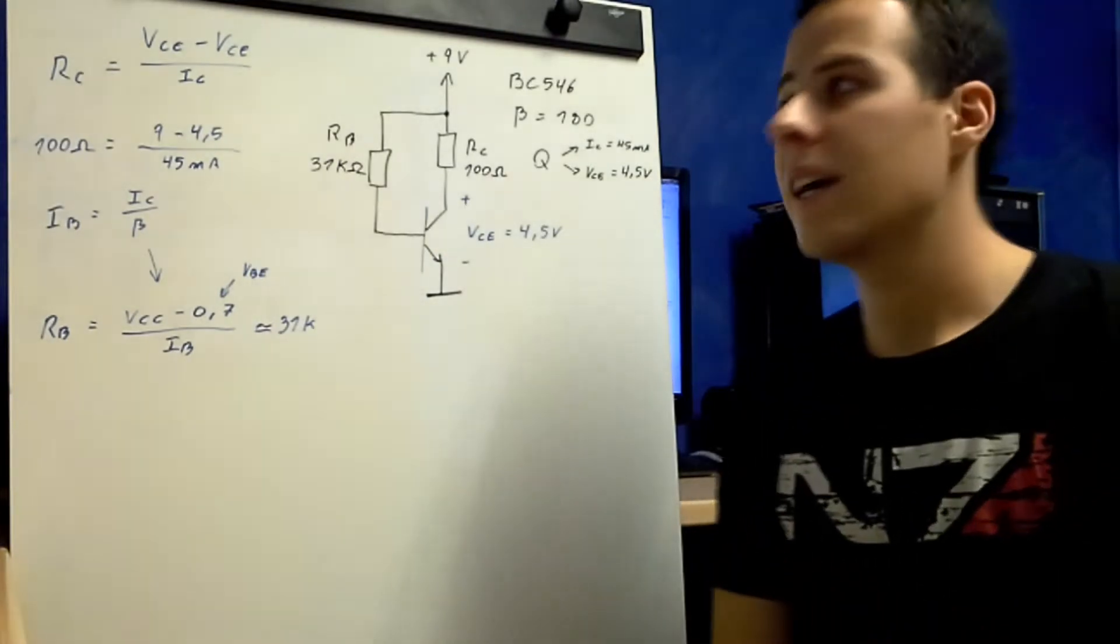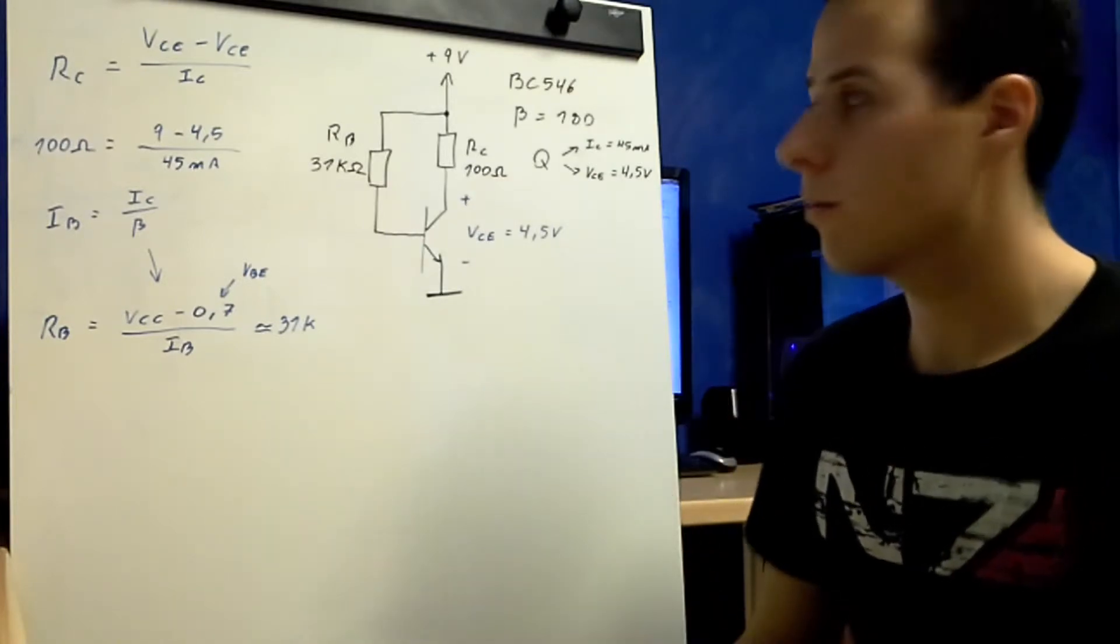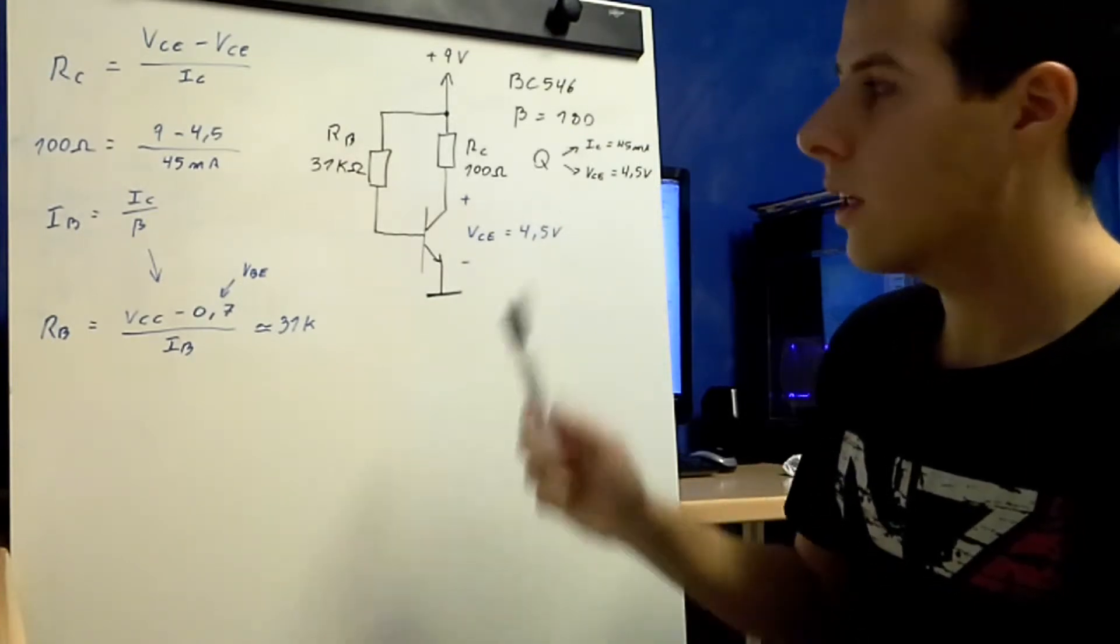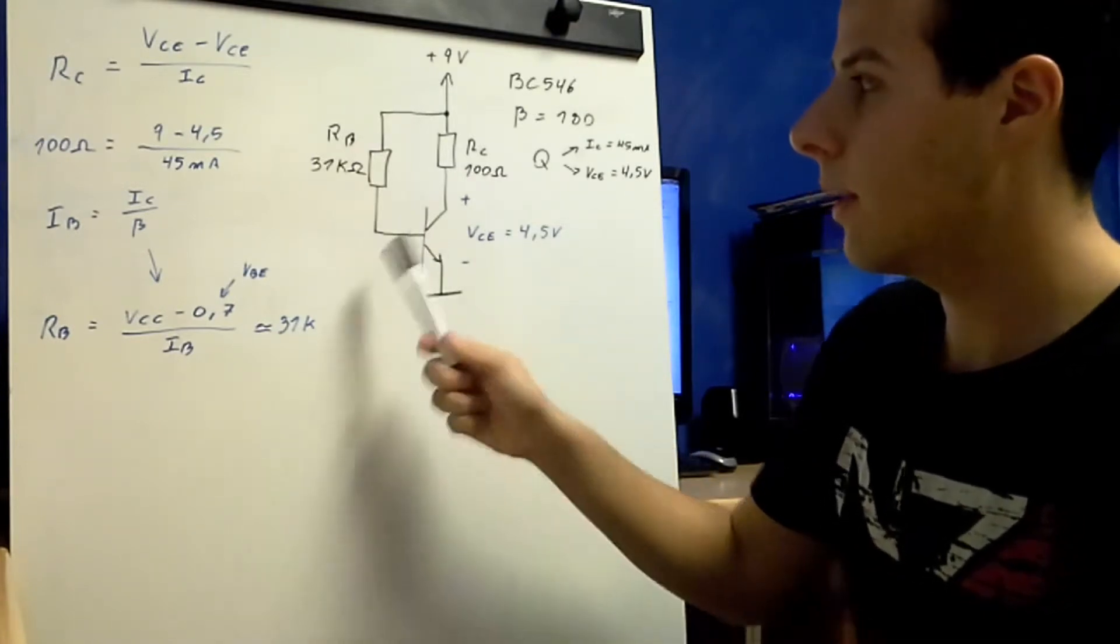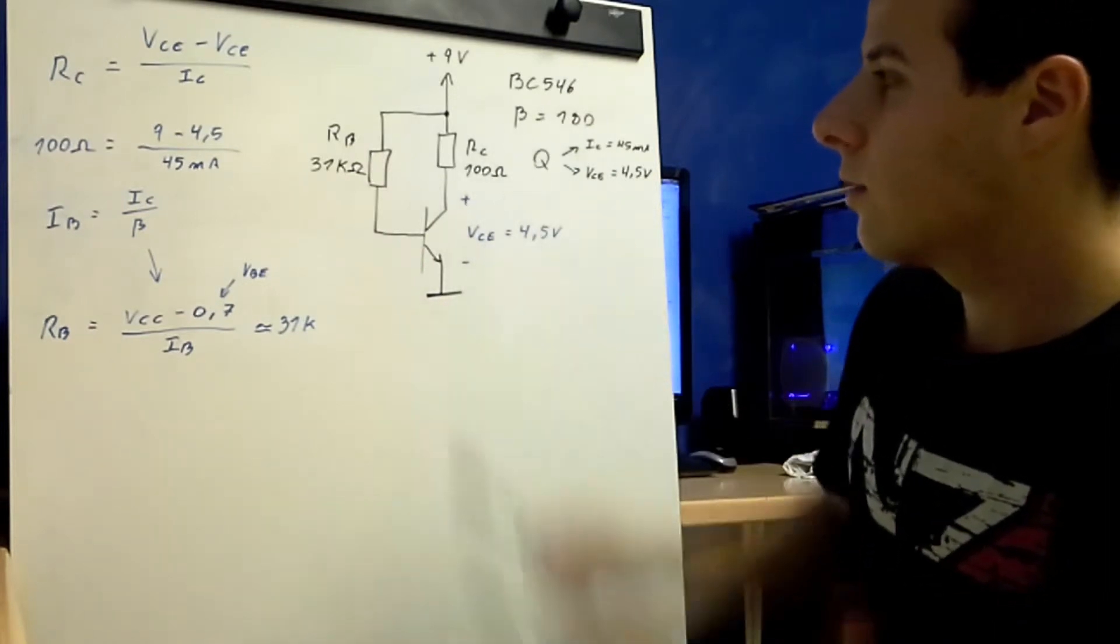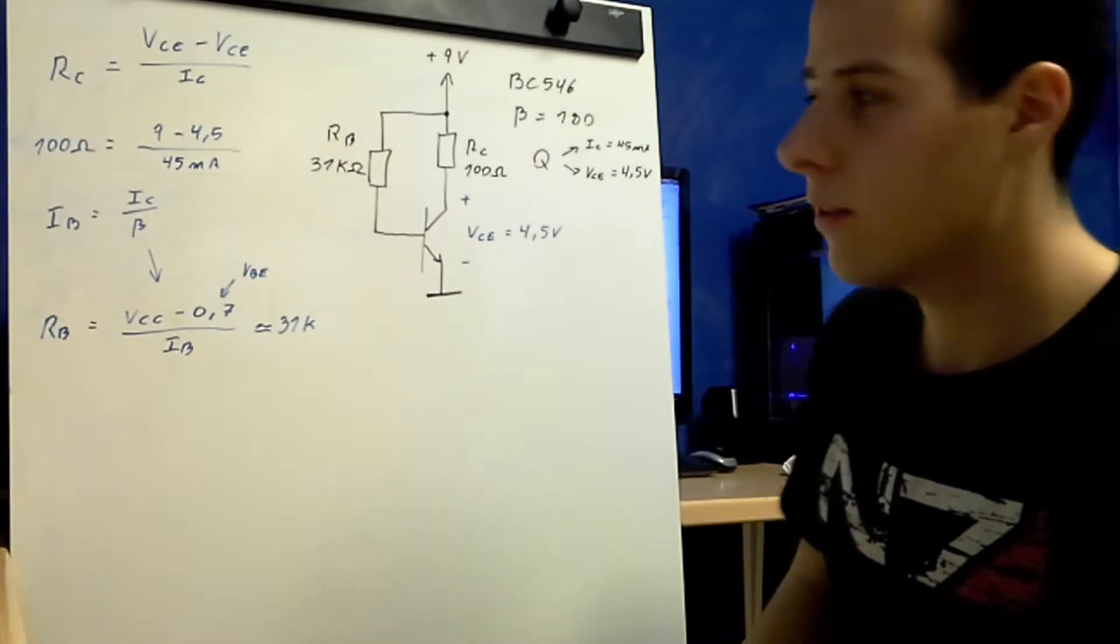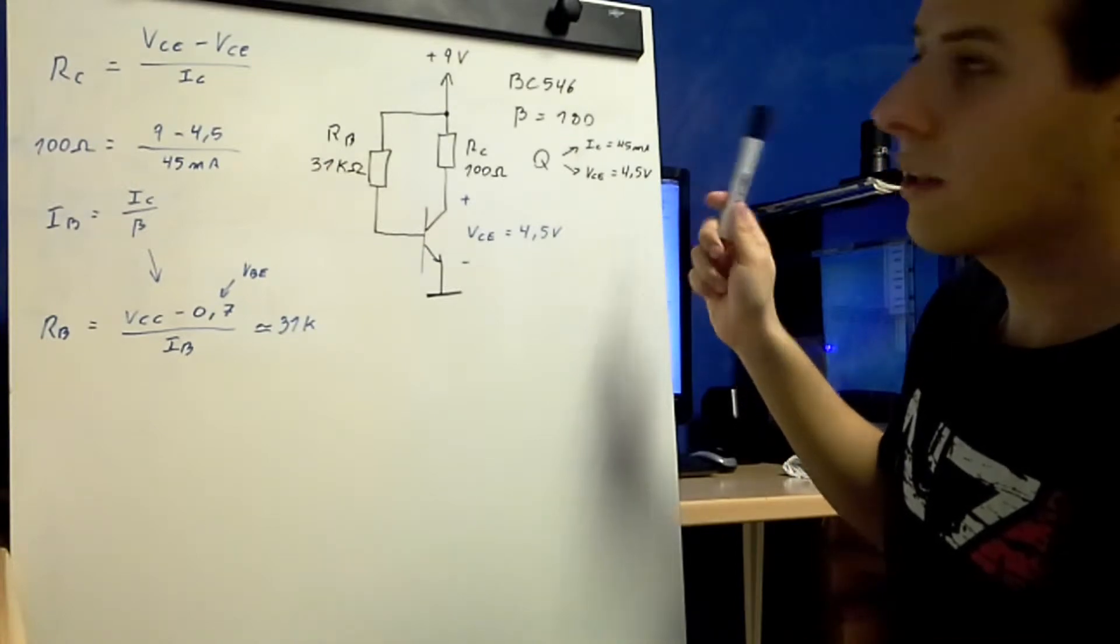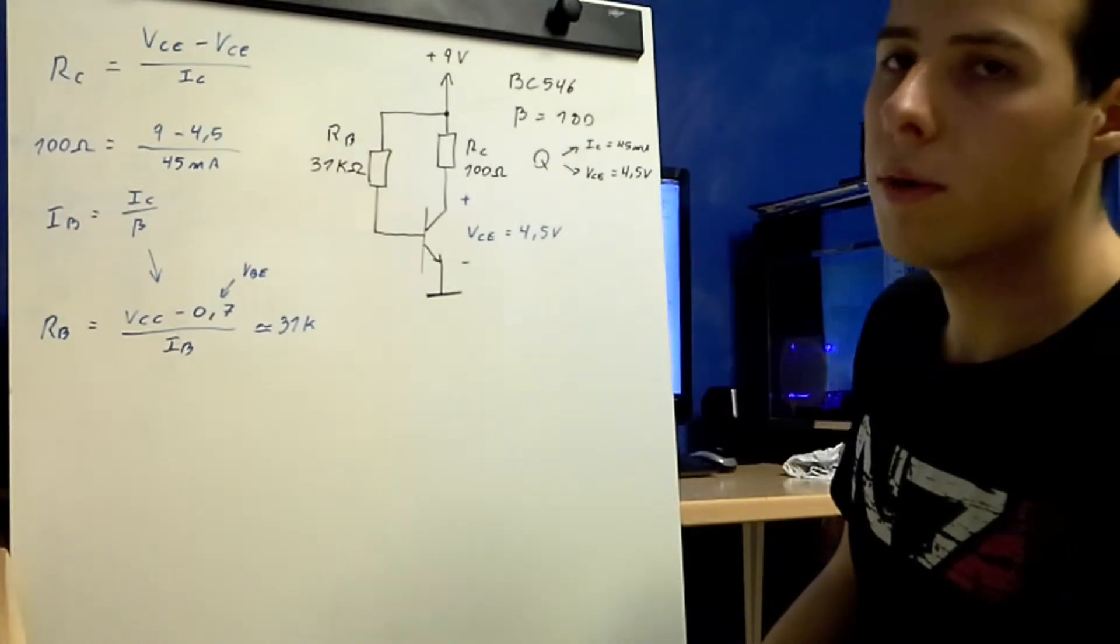So, here is my biasing circuit. It is very simple. I have just two resistors and one power supply. One for setting the base current. And the other one is for setting the collector and emitter voltage. Because, as you know, the collector current is proportional to the base current. And I want to convert that current into a voltage drop. So I can meet my biasing point specification that is here. I set my bias point to collector current equals 45mA and collector emitter voltage is equal to 4.5V.